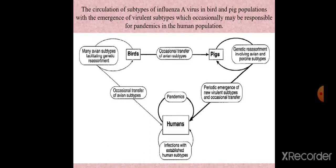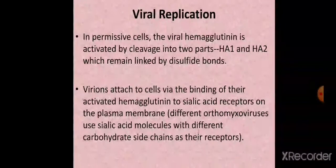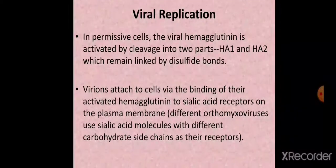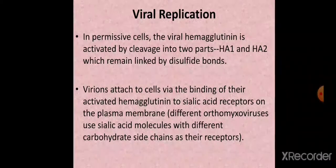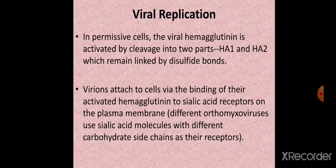There is periodic emergence of new virulent subtypes and occasional transfer to humans. Pigs, birds, and humans are interconnected in this circulation. Now we will discuss the replication cycle of orthomyxoviruses, which is somewhat different compared to other viruses. In permissive cells, the viral hemagglutinin is activated by cleavage into two parts: HA1 and HA2, which remain linked by disulfide bonds.